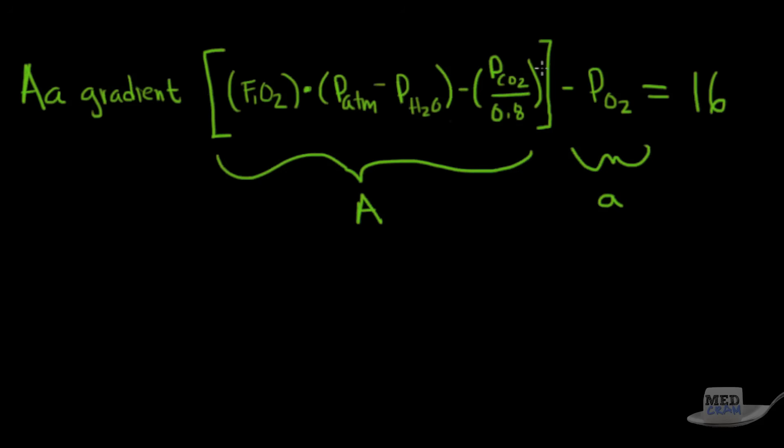You can see here if you have hypoventilation, you're going to have an increase in this factor here, which is going to cause this factor here to be bigger, which subtracted from this factor is going to make this whole A smaller. And as a result, this is going to be smaller as well. And your AA gradient actually in hypoventilation stays about the same. So what you see here is the AA gradient in hypoventilation actually does not change. But what we do see is the alveolar concentration of oxygen goes down and the arteriolar concentration of oxygen goes down. Therefore, we have hypoxemia.